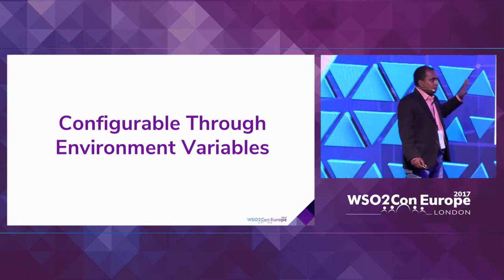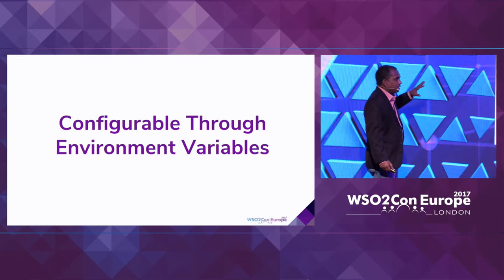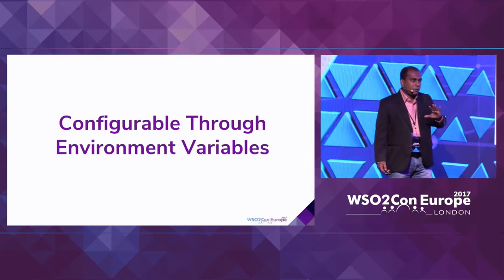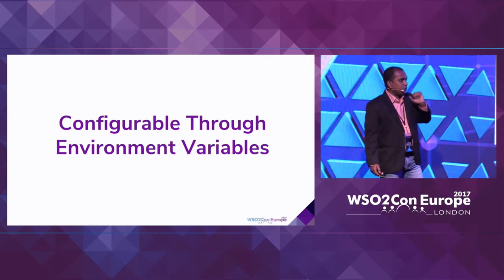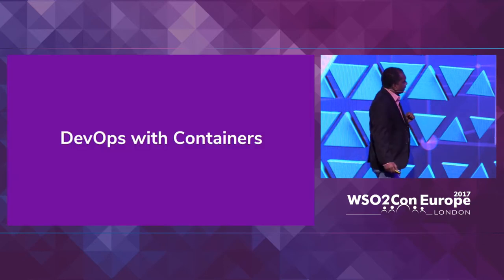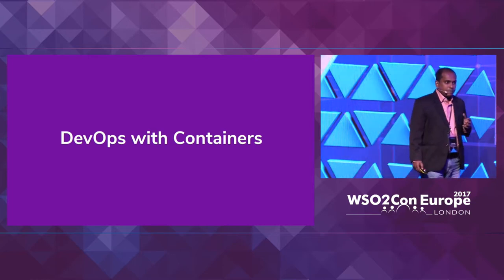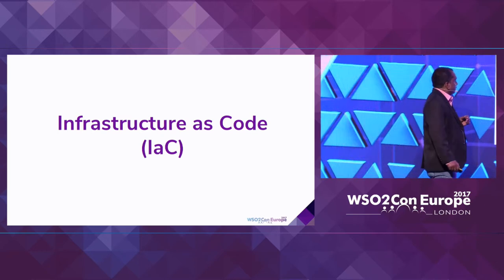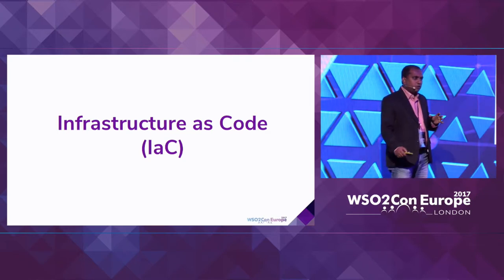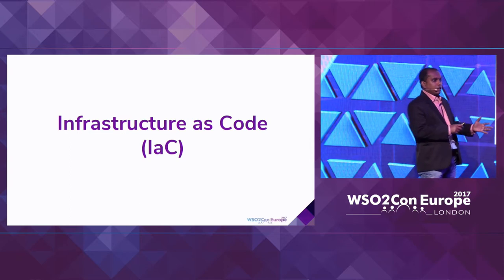All these features I've explained are container-native architecture features. If your application is designed carefully using these concepts, it's very easy to run in operation. Let's look at DevOps with containers. You may have heard about infrastructure as code. Normally in the software development lifecycle, developers build software and produce a zip file, which is handed to QA teams.